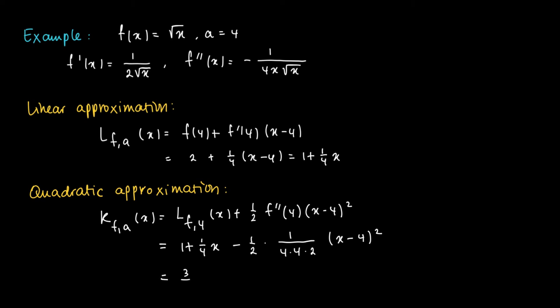If we gather the terms, you may check that this equals 3 over 4 plus 3 over 8 times x minus 1 over 64 times x squared.